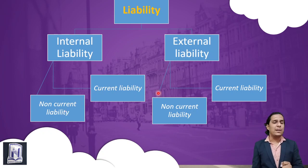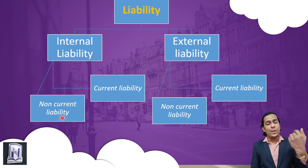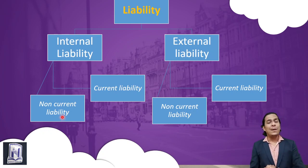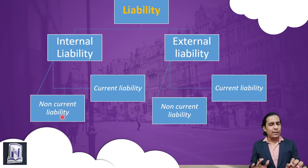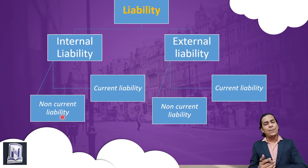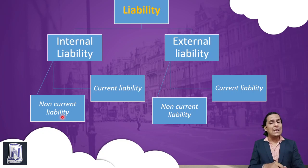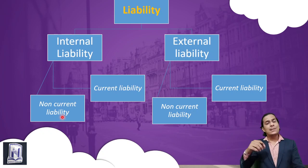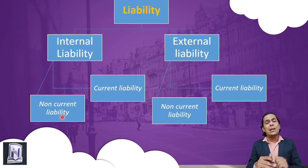Any liability can further be divided into two parts: non-current liability and current liability. Non-current liability means long-term liability — where more than one year of time is available to repay the debt. Current liability means short-term liability — where the repayment period is less than one year. For example, if you borrowed money for 3 months, that is current liability; if for 3 years, that is non-current or long-term liability.